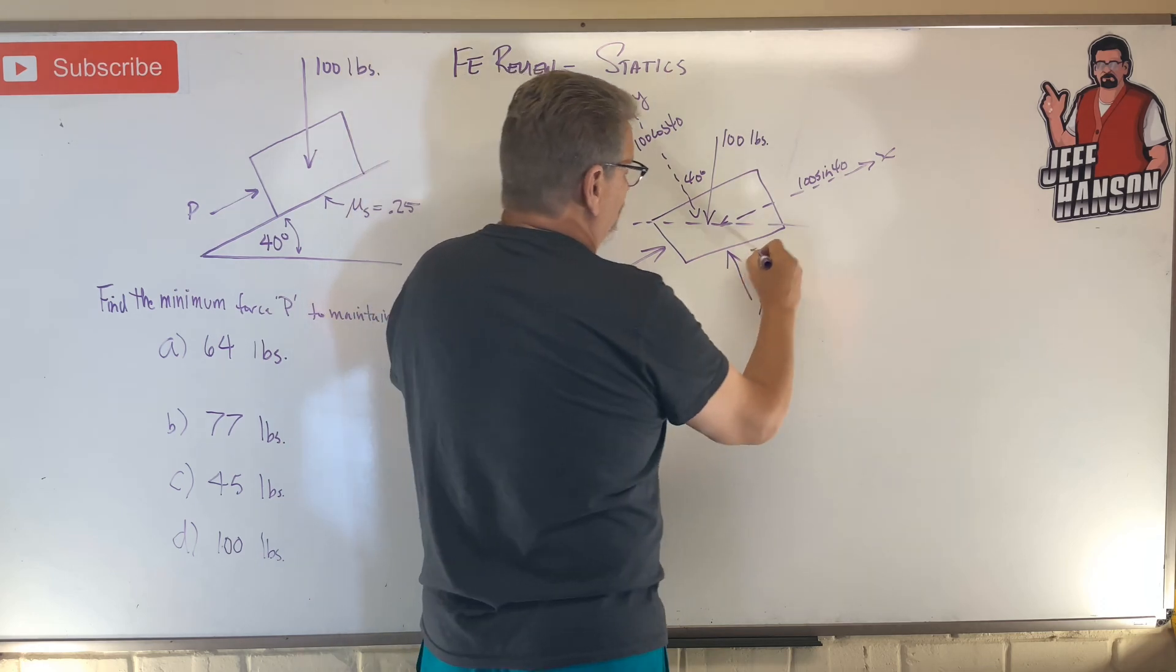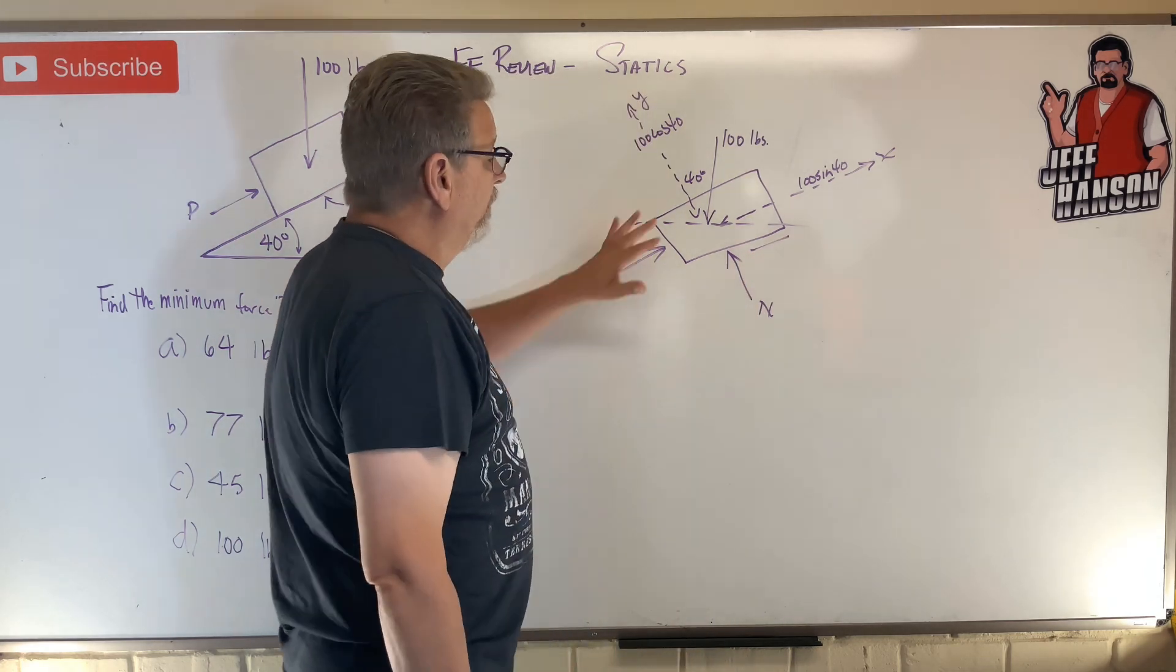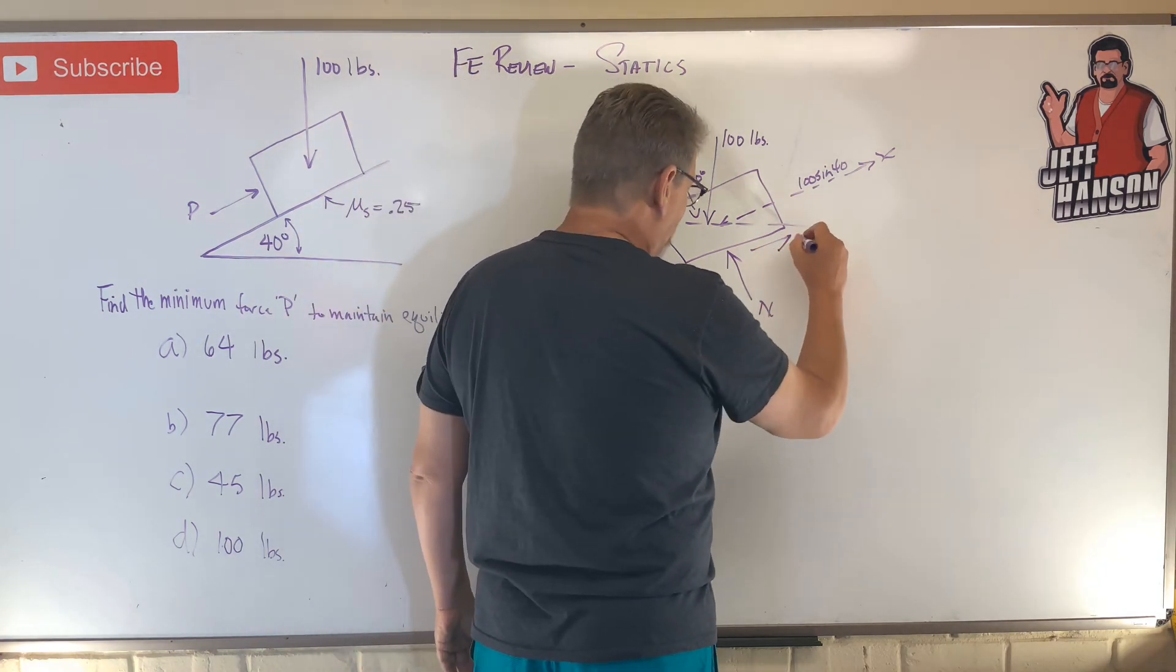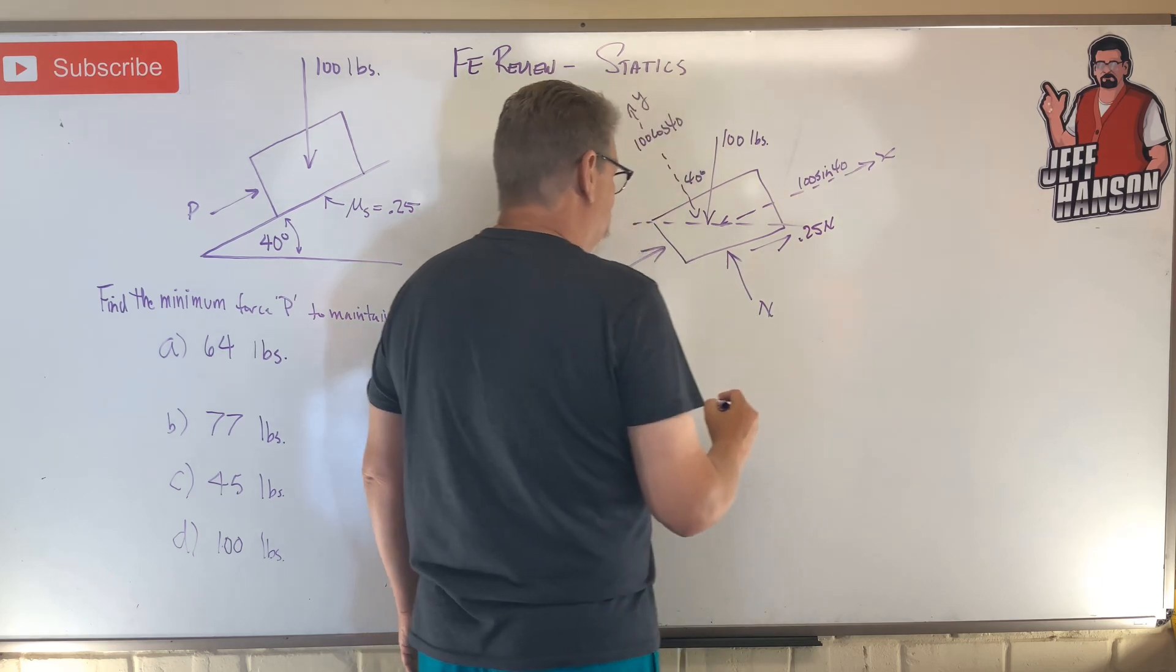And then I've got friction to deal with here. Well, the box wants to slide down the ramp. So friction is going up the ramp, 0.25N.